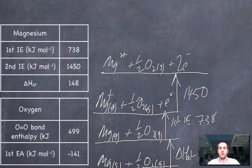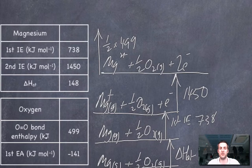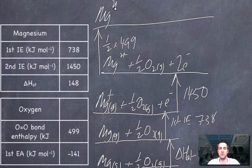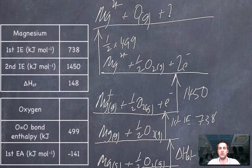What do I have to do next? Next, I've got to break this bond here because I've got to turn it into gaseous atoms, and these are molecules at the moment. What is this energy change? Well, it's half of 499. Why a half? Because this is a bond enthalpy which refers to one mole of bonds. This is half a mole of bonds, so we've got half that value. What do we have now on this level? We've still got a magnesium 2+ ion. We've now got an oxygen atom in the gaseous state, and we've still got these two electrons.